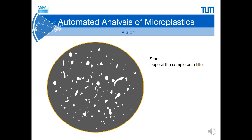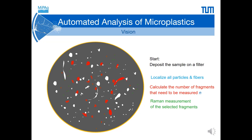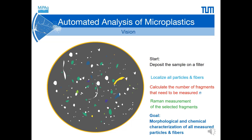Now, let us discuss how automated analysis of microplastic particles and fibres can be realized. We start with the deposition of our samples on the filter. Then, all particles and fibres have to be localized, and the number of fragments that need to be measured has to be calculated. At the next step, chemical identification using Raman microspectroscopy can be performed. Finally, we obtain morphological and chemical information on all measured fragments, including particles and fibres.